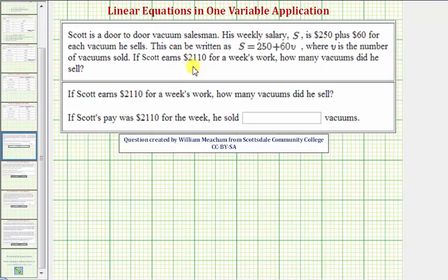If Scott earns $2,110 for a week's work, how many vacuums did he sell? Notice they're giving us his weekly salary, which is S. We're asked to determine how many vacuums he sells, which would be V. So to answer this question, we'll substitute 2,110 for S into our equation and then solve for V.